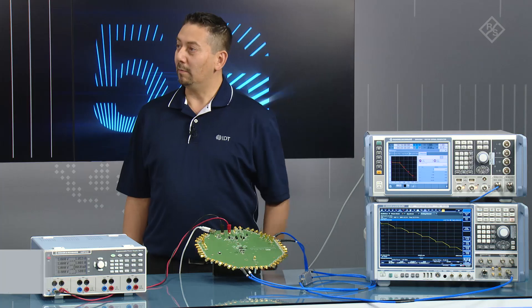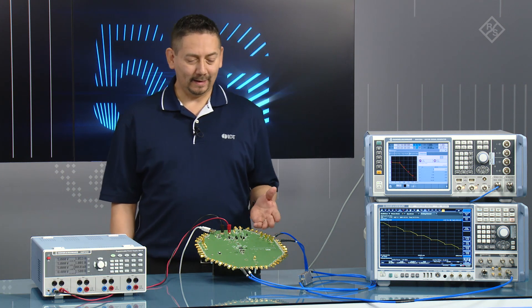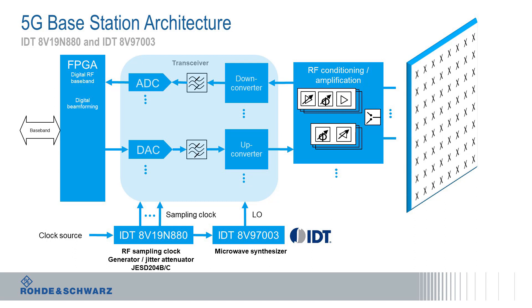Coming back to this question: what is happening if this central clock that goes into the base station is suddenly missing? Well, Martin, that's actually a really important consideration. The 8V19N880 has an input clock monitor. If it detects that the input clock is missing, it immediately puts the device into holdover, meaning that it fixes the output at a fixed frequency.